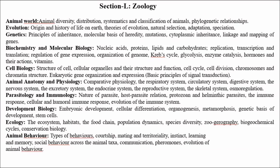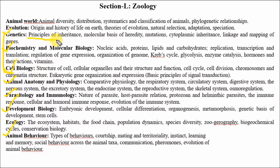The next section is zoology, Section L. Topics like genetics, biochemistry, molecular biology, and cell biology are common with the biochemistry section, so you don't need to study them separately. Just focus on the other topics in this section: developmental biology, animal behavior, animal anatomy and physiology, immunology, and Mendelian genetics — please read Mendelian genetics carefully, as many questions come from it.